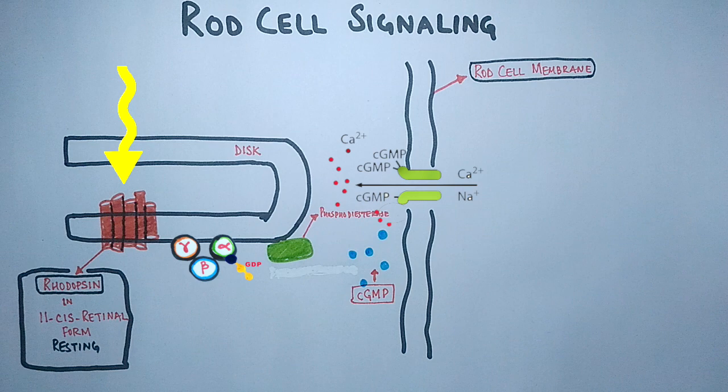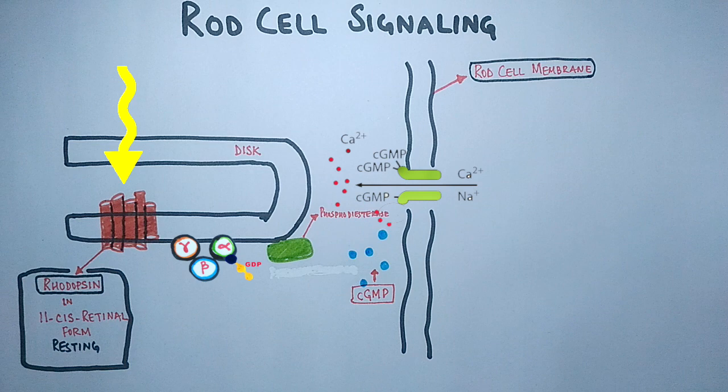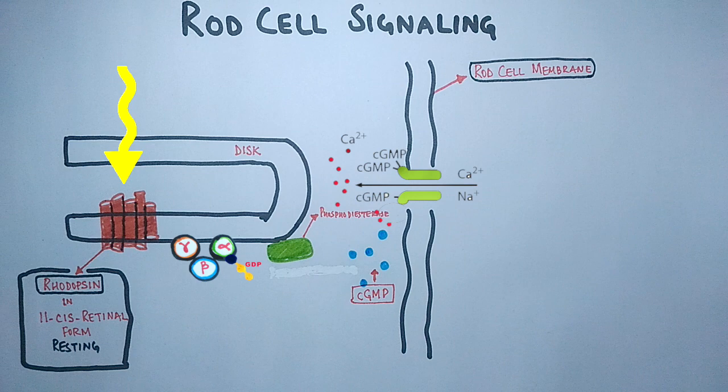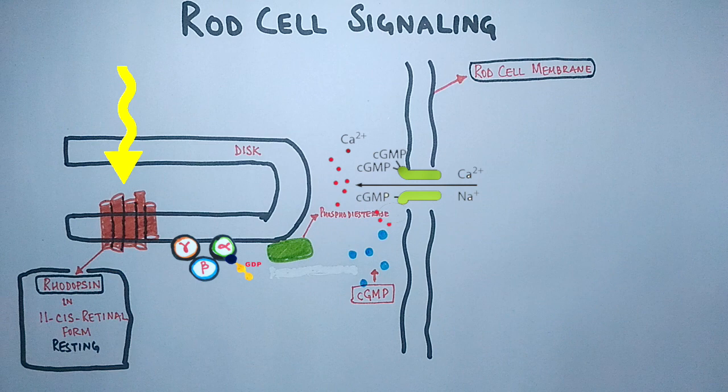But when the light strikes the rhodopsin molecule, the photon interacts with the retinal chromophore in photoreceptor cell. The retinal molecule undergoes isomerization, changing from 11-cis retinal to all-trans retinal configuration via the intermediate, metarhodopsin. This process leads to bleaching also.